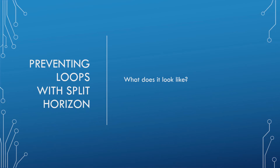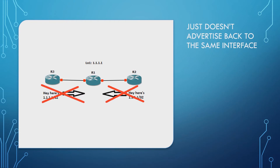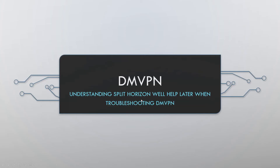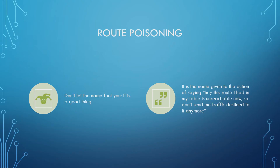So what does split horizon actually look like? It's straightforward: with split horizon enabled — whether in RIP or EIGRP — Router 2 and 3 simply no longer advertise back to Router 1 on the same interface they learned from. Router 1 advertises to Router 2 and 3, but they no longer advertise back on that same interface. Keep this understanding of split horizon in mind, as it will make DMVPN troubleshooting a lot clearer later on.